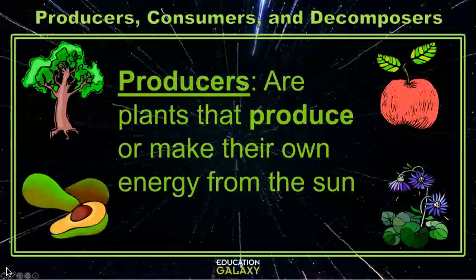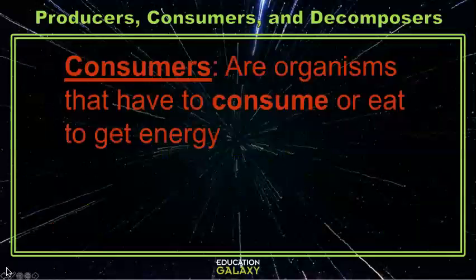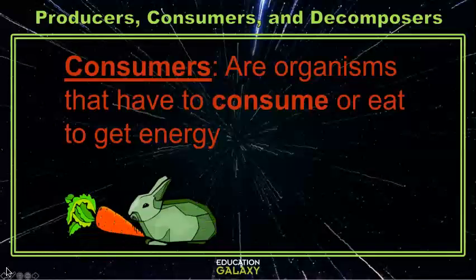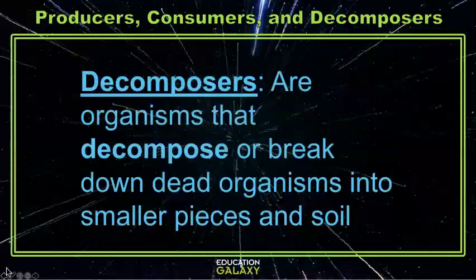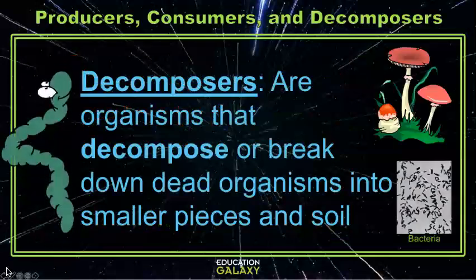Plants can then be eaten or consumed by consumers. Consumers are organisms that eat to get energy. Consumers aren't just limited to eating producers or plants though — they can also eat other consumers as well. There are even organisms that get their energy from eating dead material. They're called decomposers because they take dead material and decompose it into smaller pieces and soil.